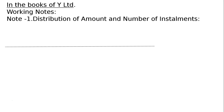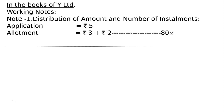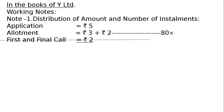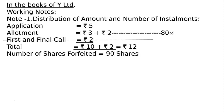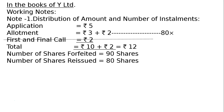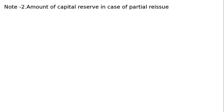Working Note 1 — Distribution of amount: Application ₹5, Allotment ₹3 plus ₹2 premium, and First and Final Call ₹2 (not yet called). Total is ₹10 capital plus ₹2 premium, i.e., ₹12. Number of shares forfeited is 90 shares; number of shares reissued is 80 shares.